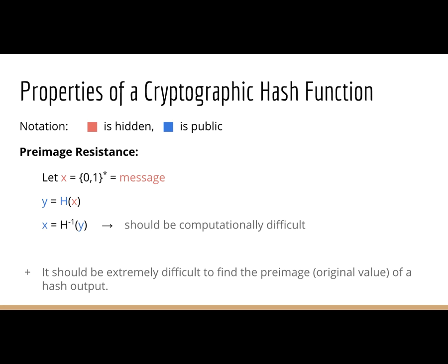As Bruce Schneier likes to say, cryptographic hash functions are the workhorses of modern cryptography — we use them everywhere; it's in pretty much every protocol. There are a few key properties we have to keep in mind. A note on notation: I denote private or hidden variables in red and public variables in blue. It's important to keep in mind what information is hidden and what is not when doing cryptographic adversarial protocol specifications.